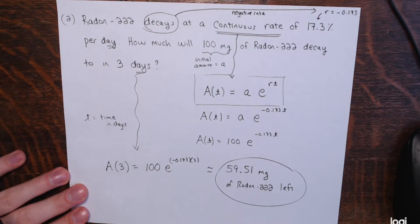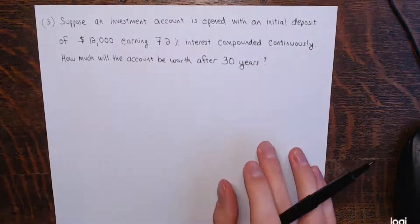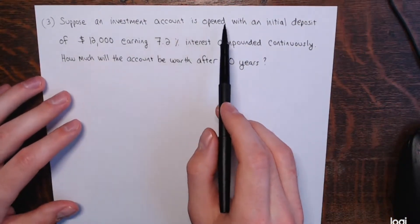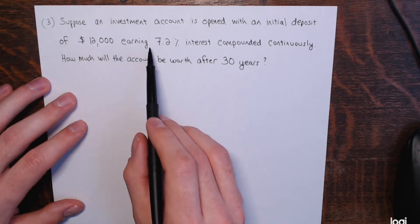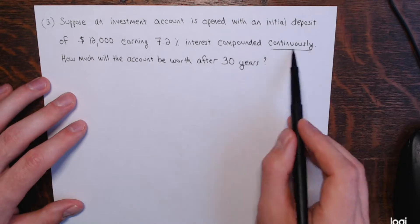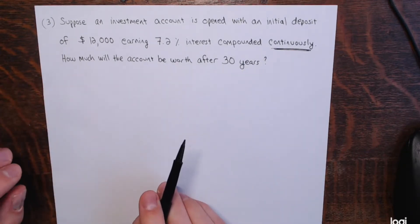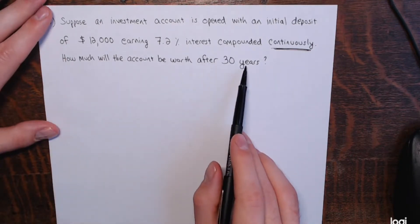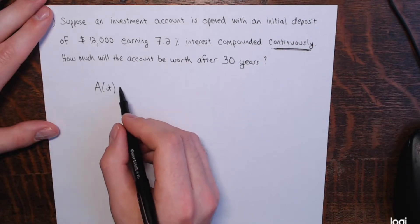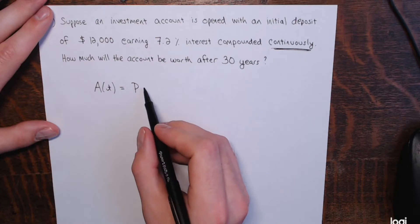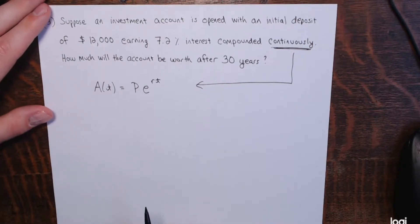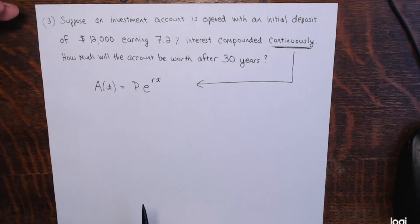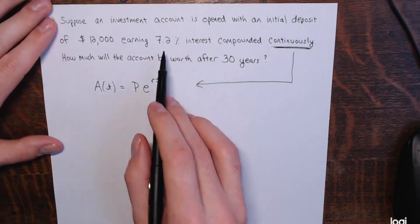The most difficult thing for people is remembering to jump to this model when you see continuous growth or continuous decay, and remembering that for decay R must be negative, for growth R must be positive. Now my third example is back to a growth of money, with principal and time in years again. Suppose an investment account is opened with an initial deposit — that's the principal — of $12,000, earning 7.2% interest compounded continuously. There's that key word continuously, continuous growth rate.